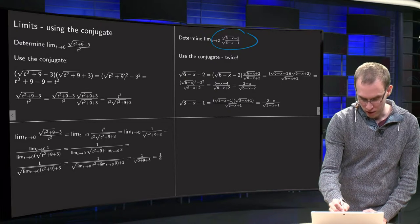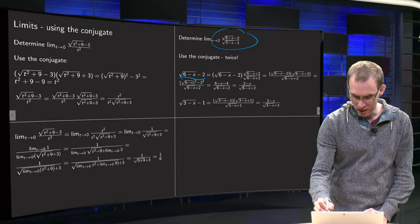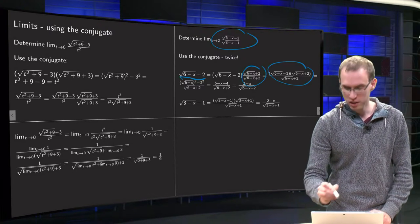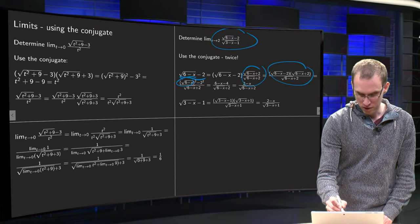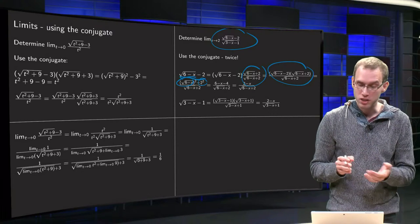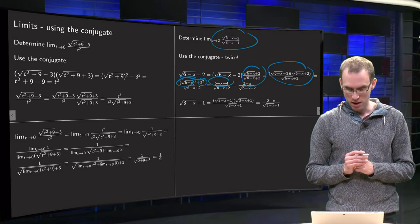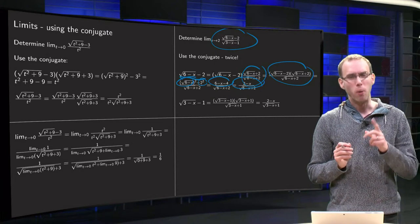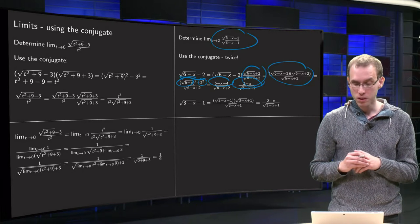So with the numerator, square root of 6 minus x minus 2, multiply by 1, like this. Square root of 6 minus x plus 2 divided by square root of 6 minus x plus 2. And make it into one fraction like that. And then the numerator simplifies, of course. That is the whole idea. That gives you the square root of 6 minus x squared minus 2 squared. And then if you work out what is in the numerator, you get 6 minus x minus 4 equals 2 minus x over square root of 6 minus x plus 2. Still doesn't look really nice. Well, remember that x is approaching 2. So this numerator goes to zero, while the denominator goes to 2 plus 2 equals 4.